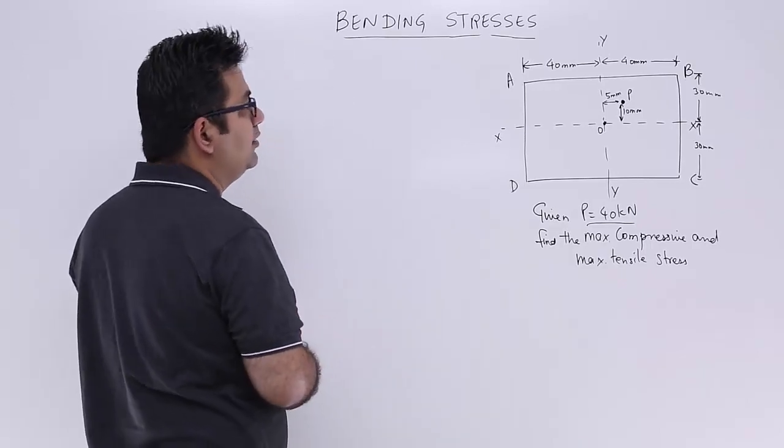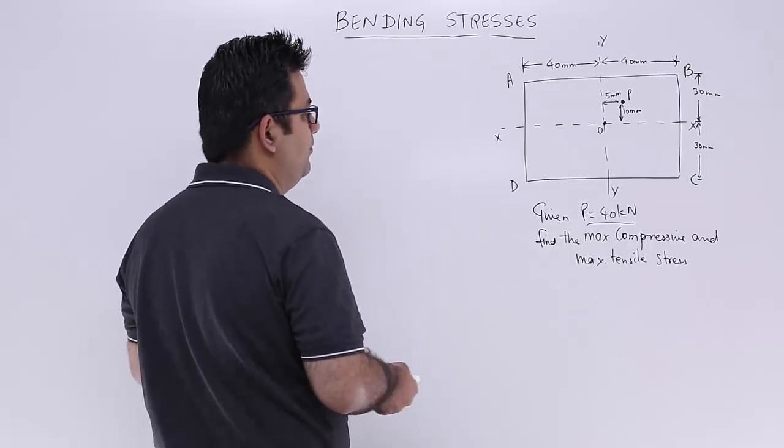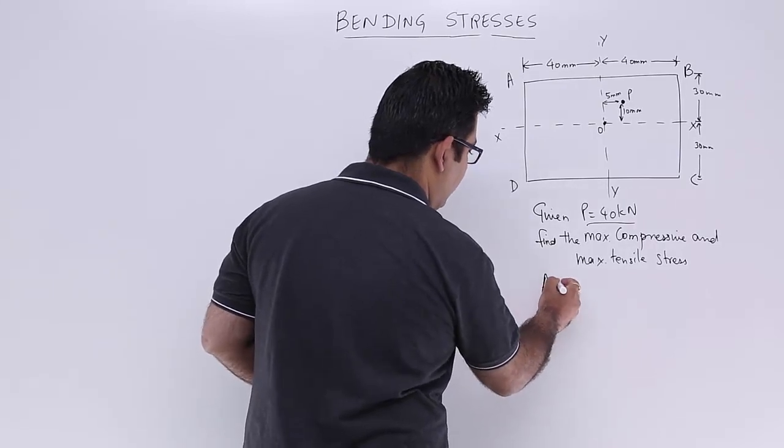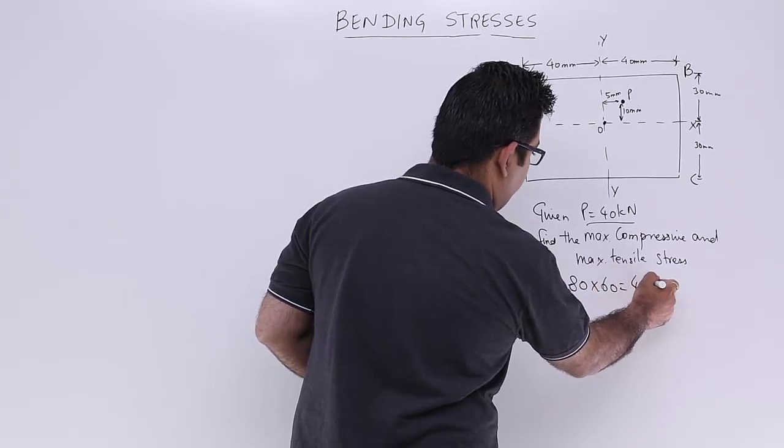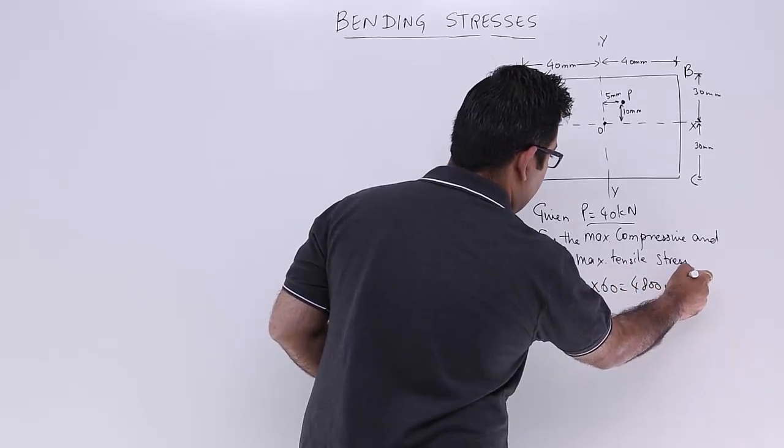The cross section area is 80 by 60. So we can straight away find out the cross section area: 80 mm into 60 mm, which gives you 4800 mm squared.